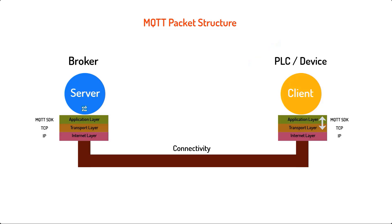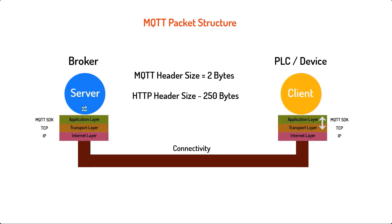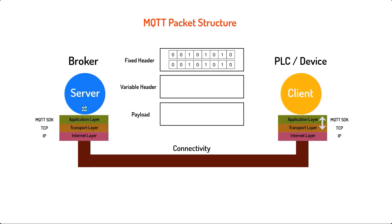Comparing the two-byte MQTT protocol header with HTTP, which can go up to 250 bytes, it becomes clear why MQTT is said to be lightweight on the wire and is the preferred IoT connectivity technology for resource-constrained devices and low-bandwidth networks. As for payload size limits, the actual topic string cannot be more than 65,536 bytes, while the message payload cannot be more than 256 megabytes — meaning you could technically send video files over MQTT.